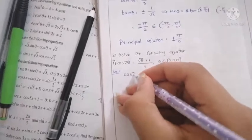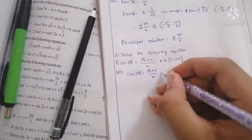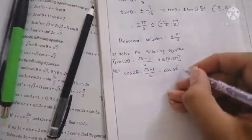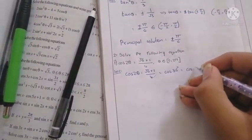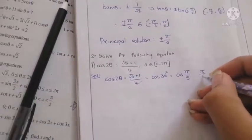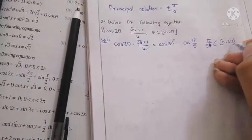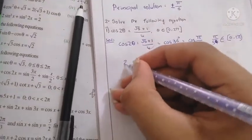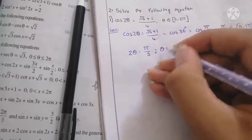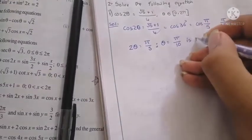Next: cos2θ = (√5+1)/4. We know cos(36°) = (√5+1)/4, i.e., cos(π/5) = (√5+1)/4. Since π/5 belongs to [0, 2π], we have 2θ = π/5, so θ = π/10 is the principal solution.